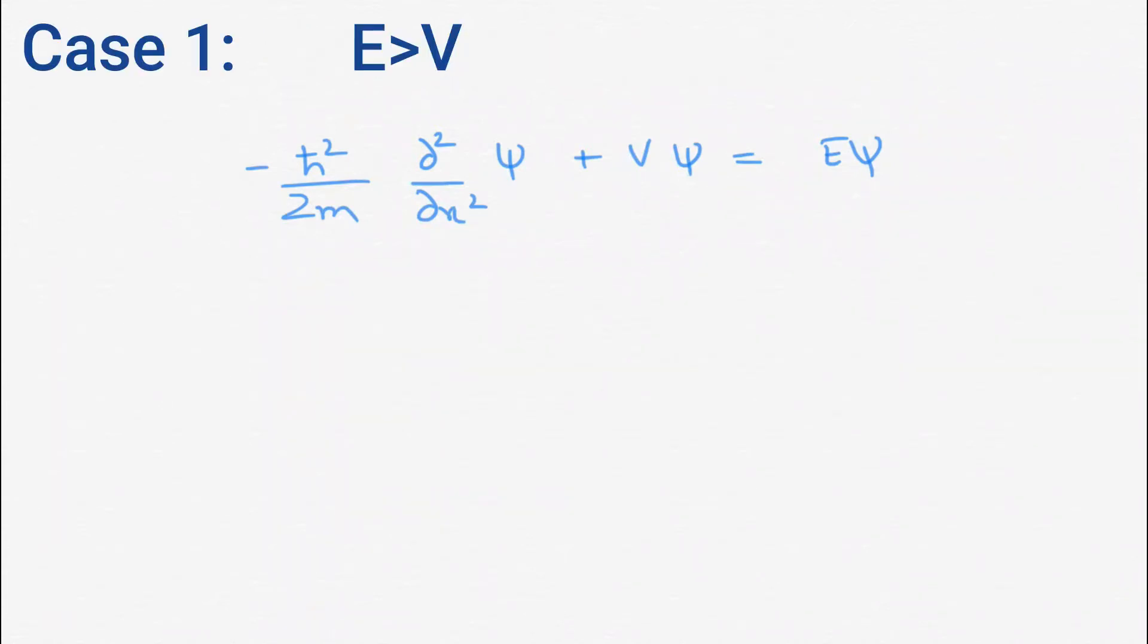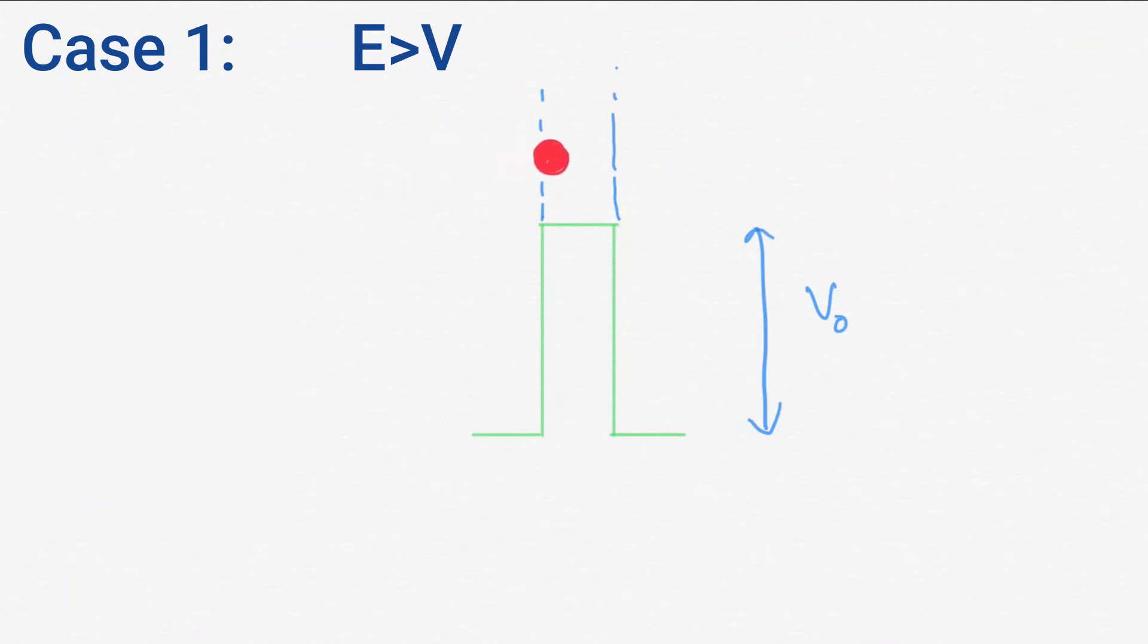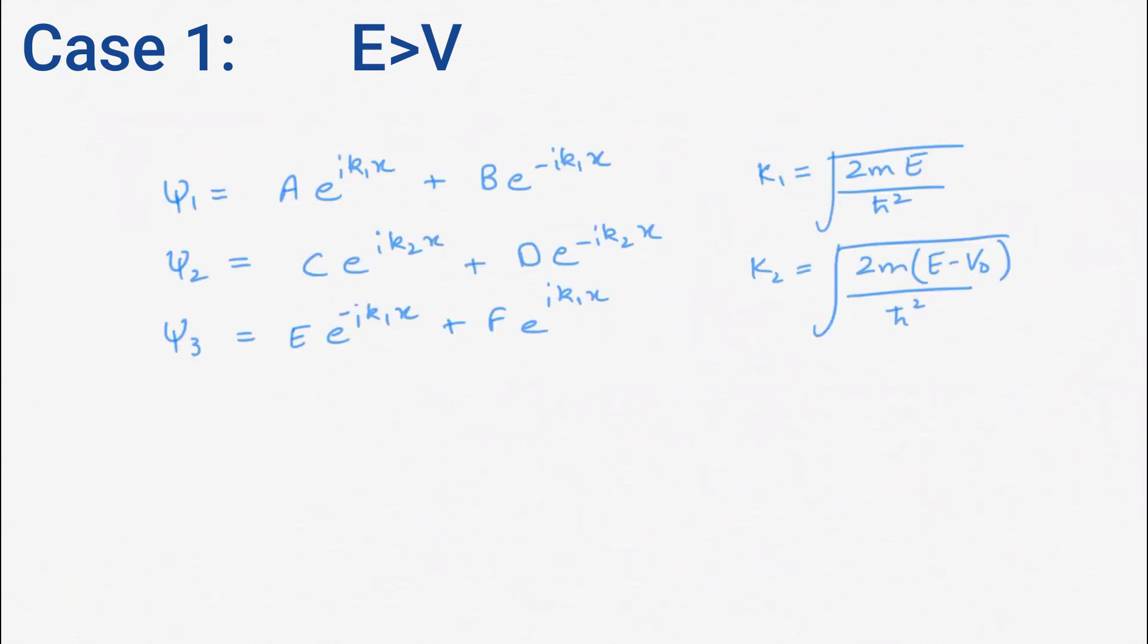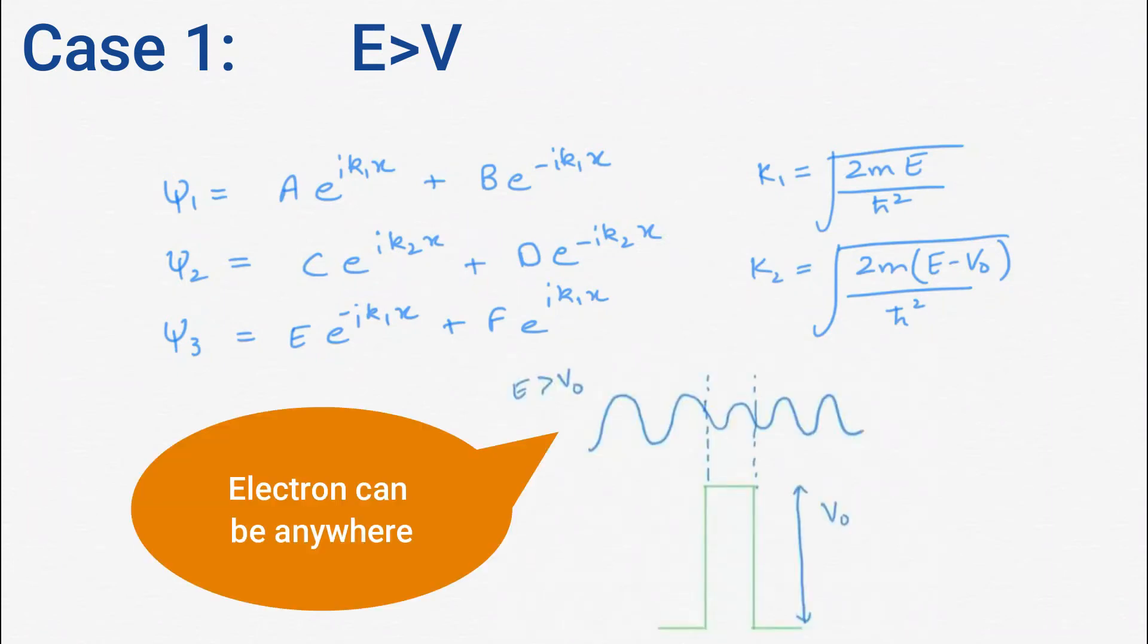Case 1: when energy is greater than V0. It is not interesting as it is all classical. And solution to this case is like this. And the probability density function for this case looks like this. The electron can be anywhere in this case.